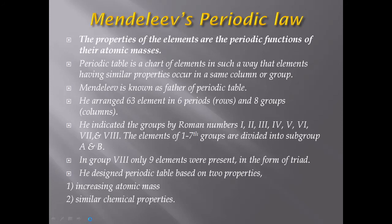Periodicity means that after a certain time period, properties show repetition. The periodic table is a systematic arrangement — a tabular chart — of elements in such a way that elements having similar properties occur in the same group or column. The properties of the elements are a periodic function of their atomic masses. He arranged all the elements in increasing order of atomic mass based on their properties.